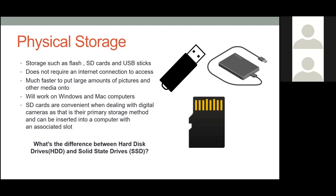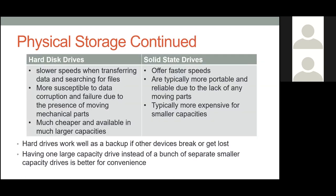If you're shopping for a hard drive to store your photos, you might have seen regular hard disk drives (HDDs) or solid state drives (SSDs). Hard disk drives are a bit slower when transferring data and more susceptible to data corruption and failure because there's an actual spinning disk and a lot of moving parts inside. But the upside is they're much cheaper and available in much larger capacity — multiple terabytes, thousands and thousands of photos — relatively cheap.